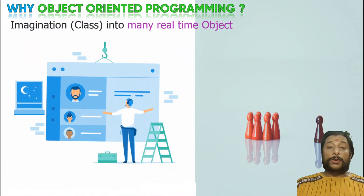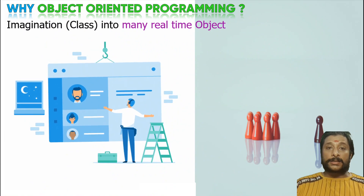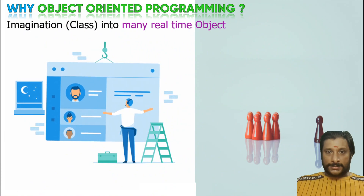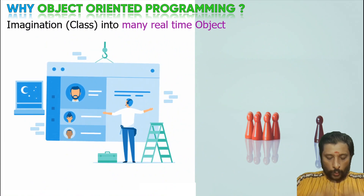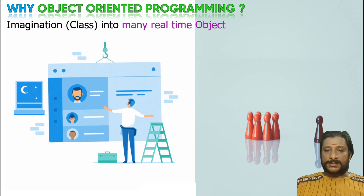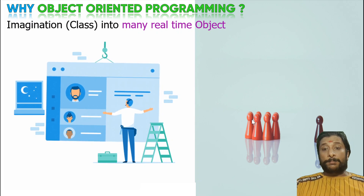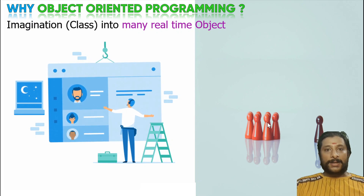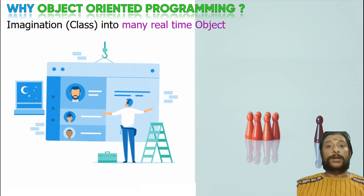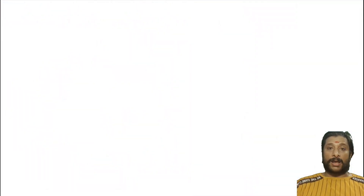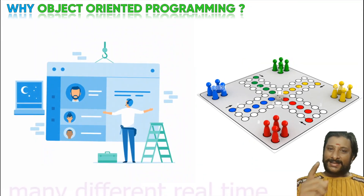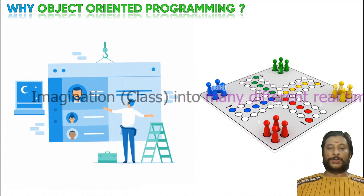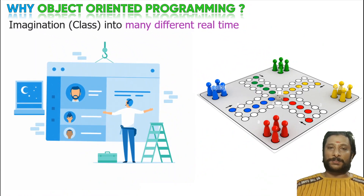We are able to create a lot from one template. I have one class, and from that we are able to create many objects. To create many of them, we need some basic and very strong programming — and that can be achieved with object-oriented programming.